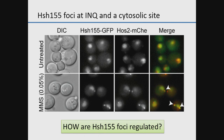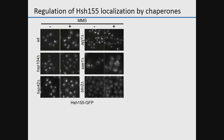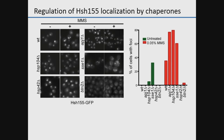We wanted to understand how the localization of this splicing factor is regulated. Much like other proteins at protein aggregates, its localization is regulated by molecular chaperones. There are two types: disaggregases like HSP-104 and SSC-1 that promote resolution of these protein quality control structures — when mutated, we see a significant increase in cells bearing foci both in unstressed and stressed conditions.